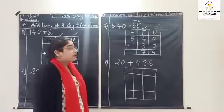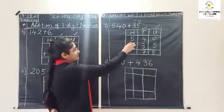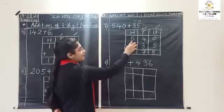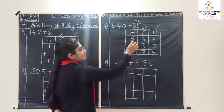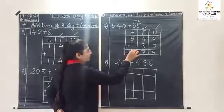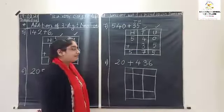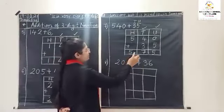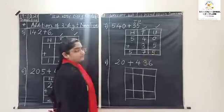Now come to hundreds place. Is there any number here? Five plus zero — no number. So bring this number down. The answer is five hundred and seventy-five.